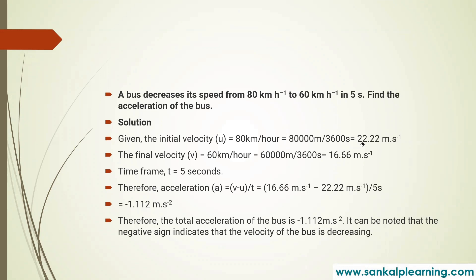Since the speed is decreasing from 80 to 60, the final velocity is 16.6 and the initial velocity is 22.2. So acceleration equals 16.6 minus 22.2 divided by 5. You are getting the answer as negative, which means the acceleration of the body is decreasing — it is retardation — to the value of 1.12 meter per second square.